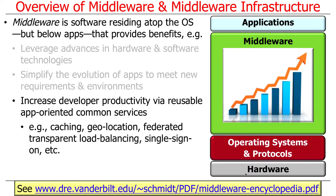Another benefit is raising the level of abstraction for programming networked and distributed systems — not requiring developers to code directly to low-level ByteStream APIs, but instead giving them reusable common services that are application-oriented, like geolocation, federated single sign-on, transparent load balancing, caching, and so on. These are all quite valuable things you don't have to invent yourself every time, and a lot of what Android provides are exactly those things.